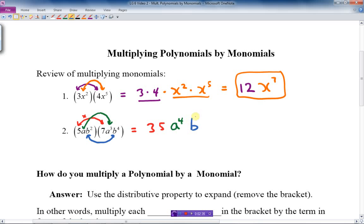Which gives us our answer: 35a⁴b⁶. We've just reviewed very quickly multiplying monomials. Let's get into what we're going to do today.